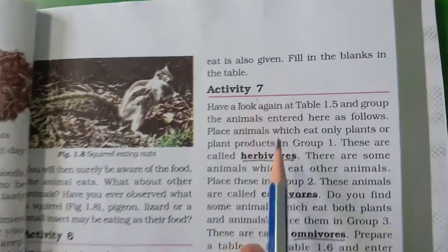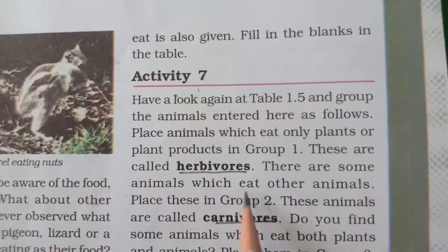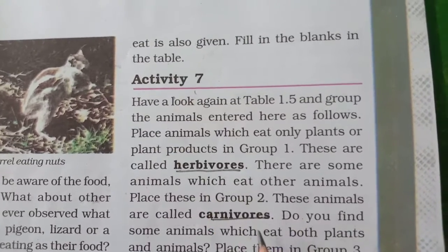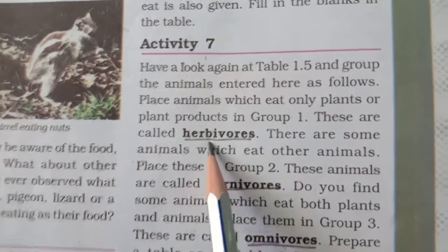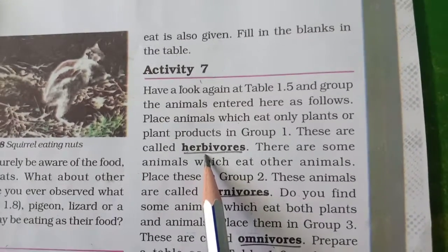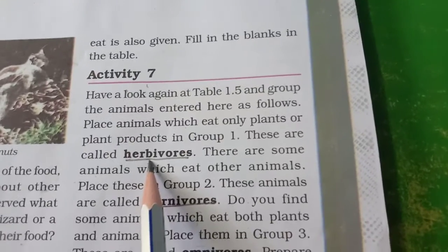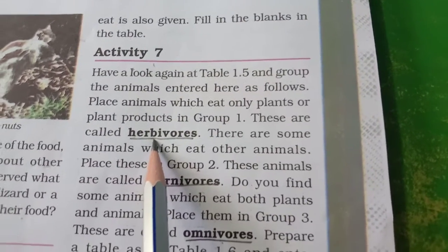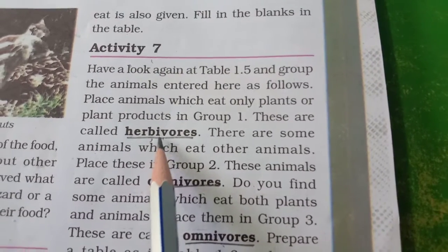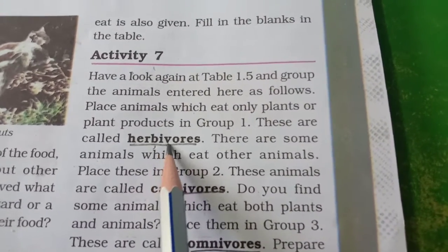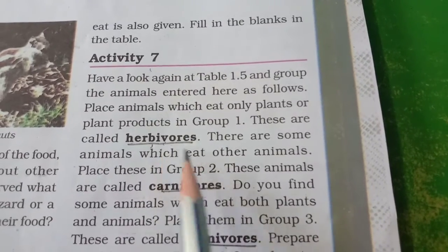Now let us look at activity number 7. They have given three groups as keywords: herbivorous, carnivorous and omnivorous. What is herbivorous? Herbivorous means the animals which eat only vegetables, grains or grass. Herbivorous animals do not eat any meat or any other animal.